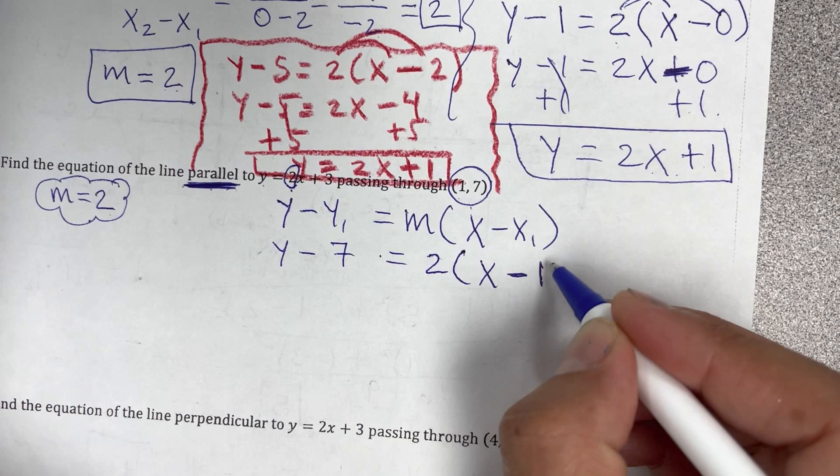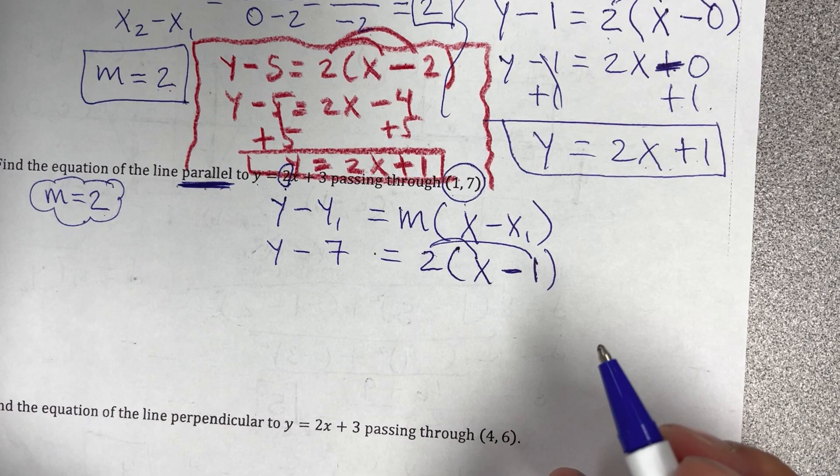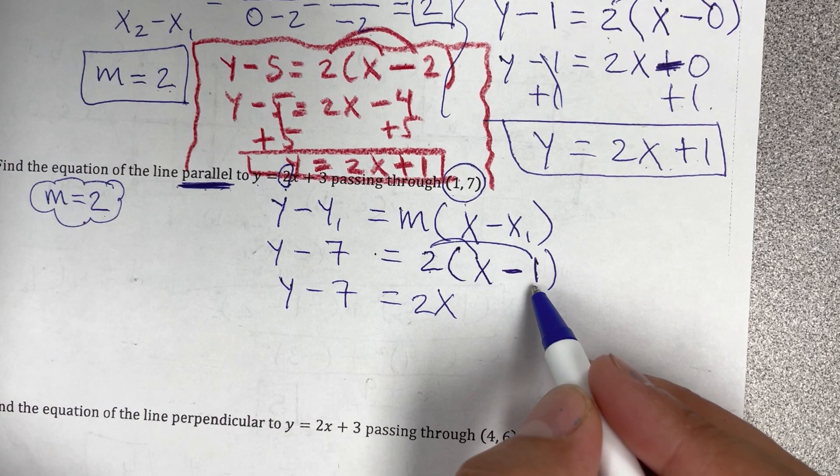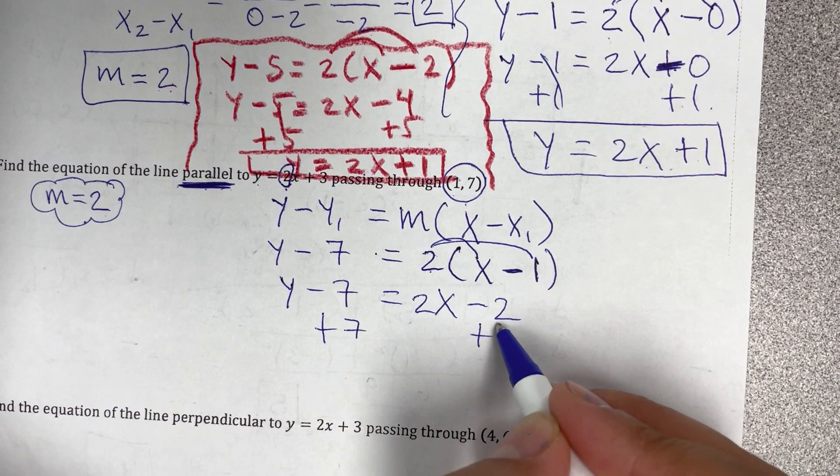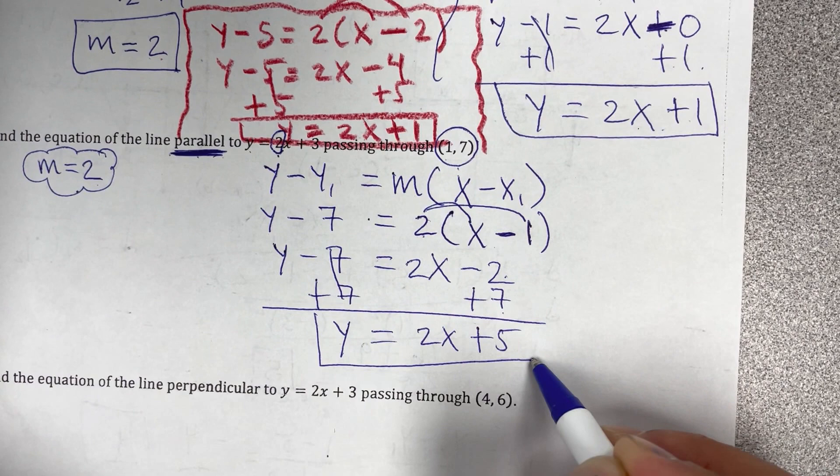Hacemos distributive property. Ese sería el segundo punto, el segundo paso. El primero es sustituir, el segundo es distributive property. Este solo se baja igual. 2 times x, 2x. 2 times negative 1, negative 2. Cancelamos, adding 7. And y is equals to 2x. Debo 2, pago 7, me quedo con 5. So y equals 2x plus 5.